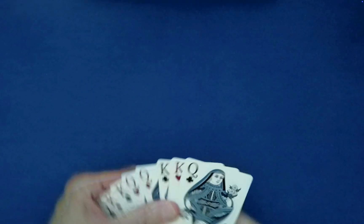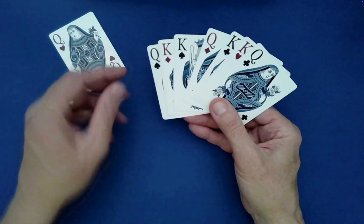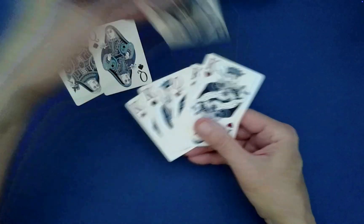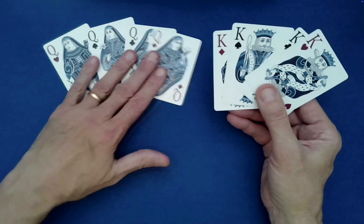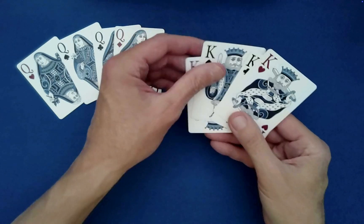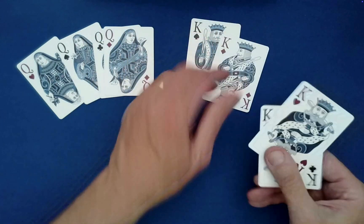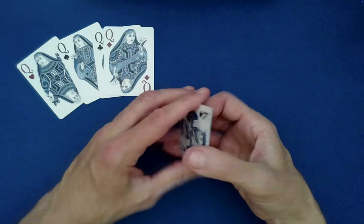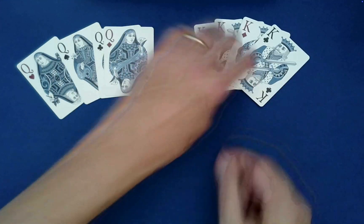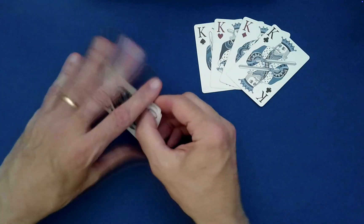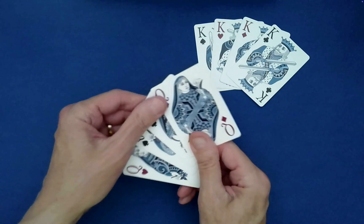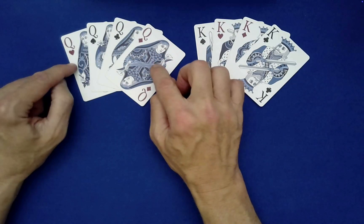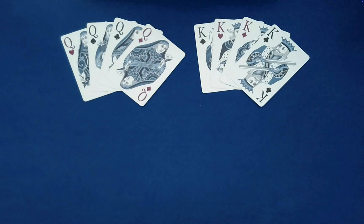The second one, we begin with a similar setup. Now, I may not remember the exact original ordering that I showed you for the first little performance because I really didn't keep track. I think it was something like this. So you have the four kings, but you have two black ones on the outside and two red ones on the inside. And then for the queens, you do the opposite. Two red on the outside, two black on the inside.